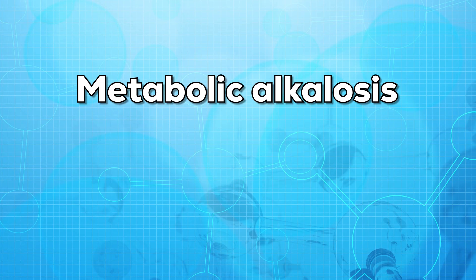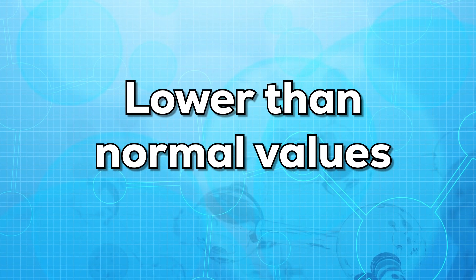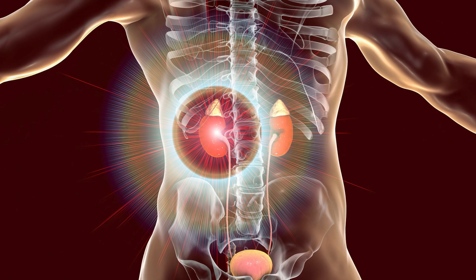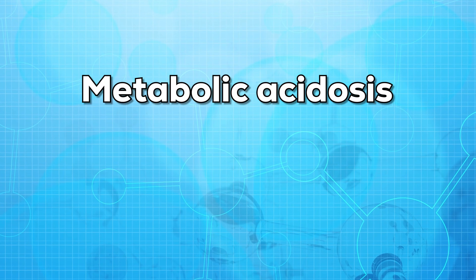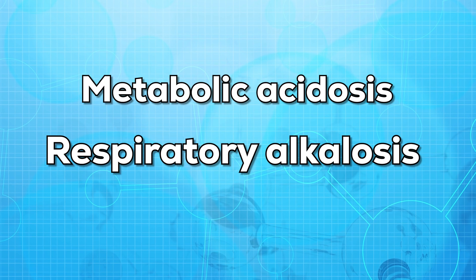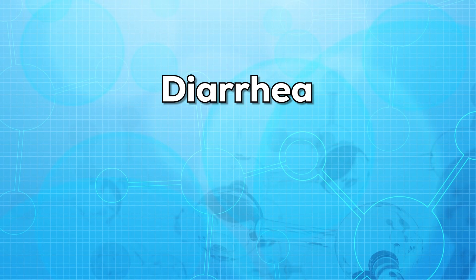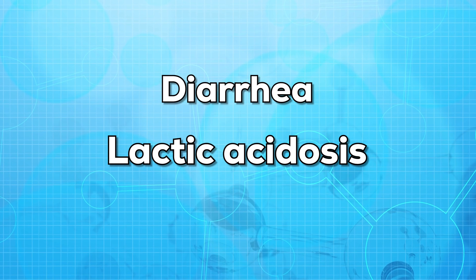A higher than normal value may indicate Cushing syndrome and Bartter syndrome. This may also mean metabolic alkalosis and respiratory acidosis. A lower than normal value may indicate kidney disease or Addison's disease. It may also indicate metabolic acidosis and respiratory alkalosis, and can also be associated with diarrhea and lactic acidosis.